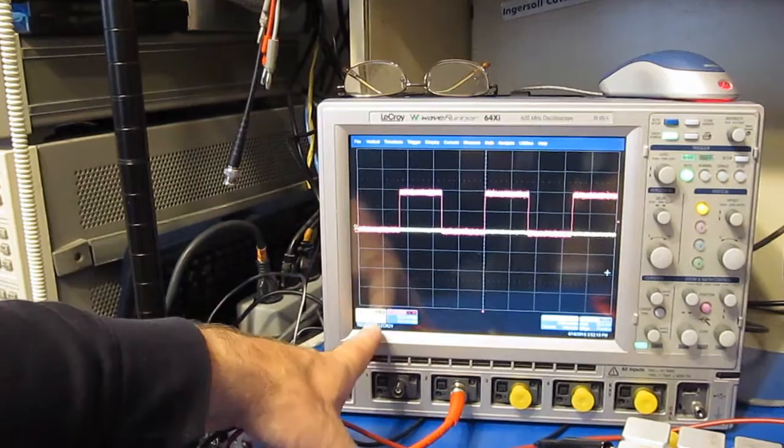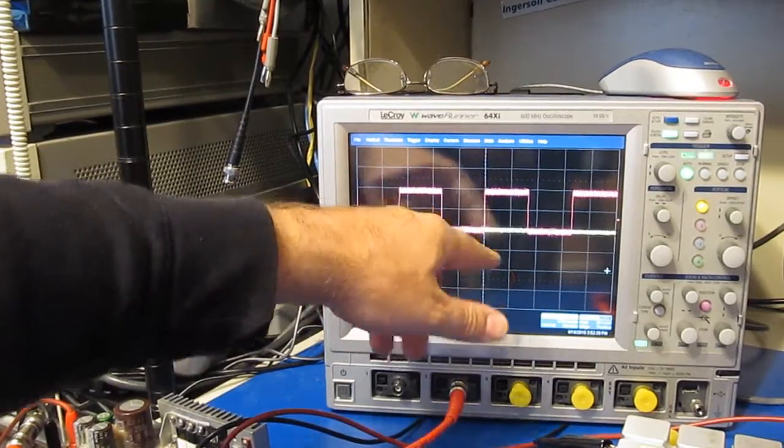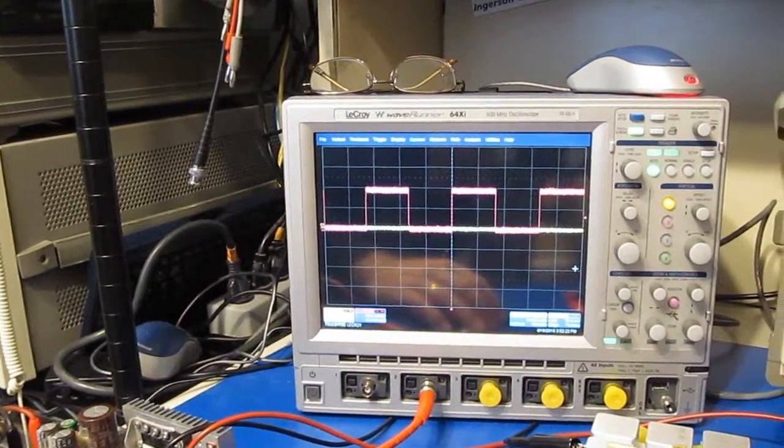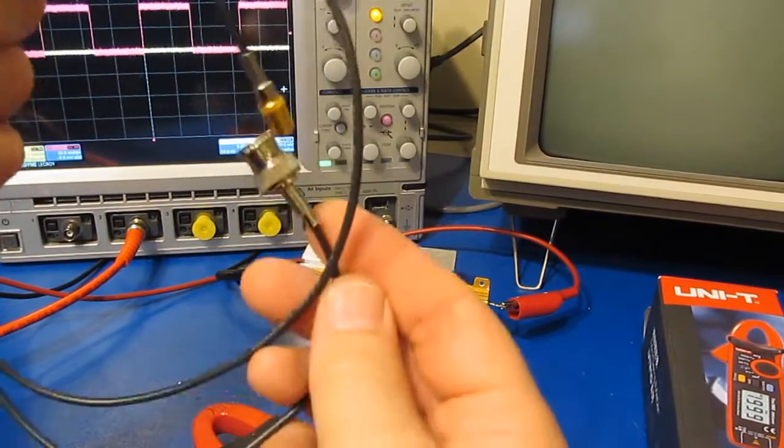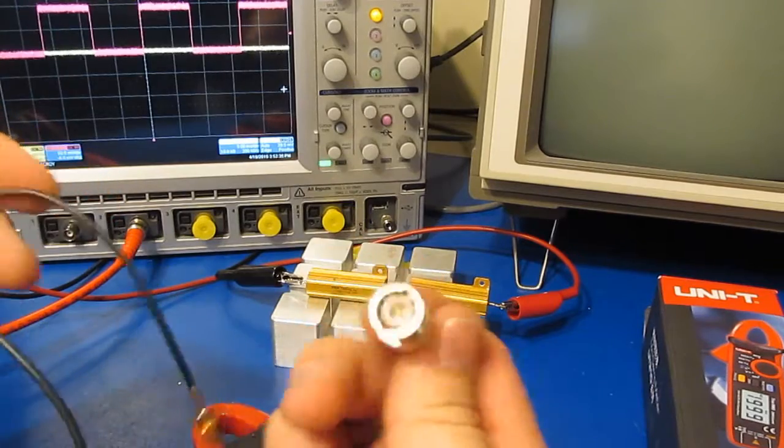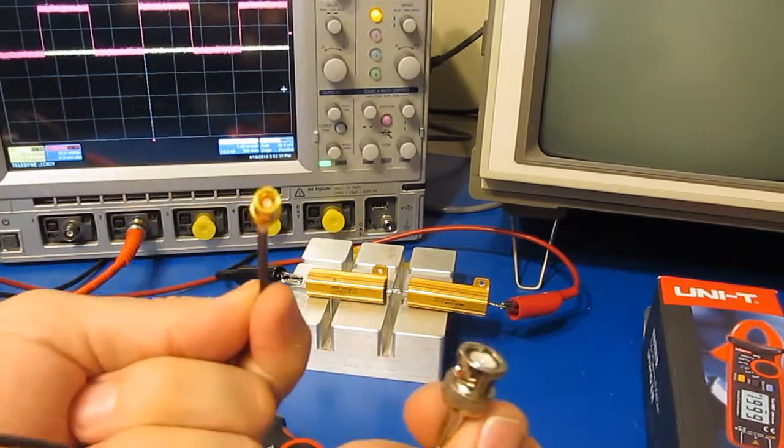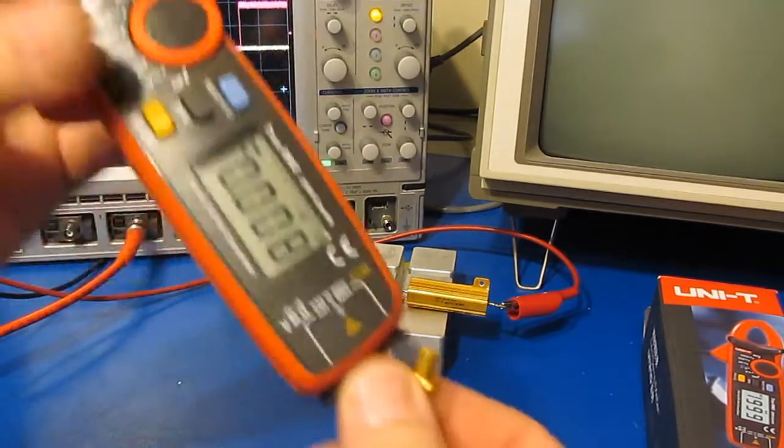This is looking at 50 millivolts per division and you can see we're two divisions or roughly one amp peak. I have a small cable that I've made up for this. This is just a standard BNC on the one side and SMB on the other.